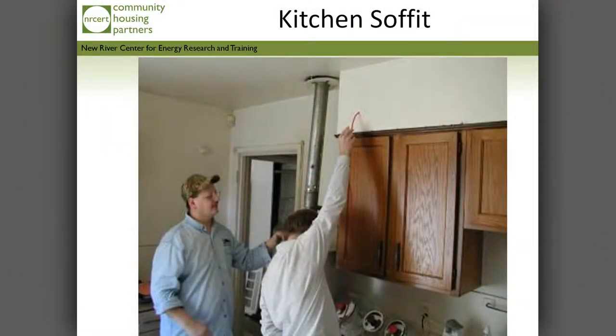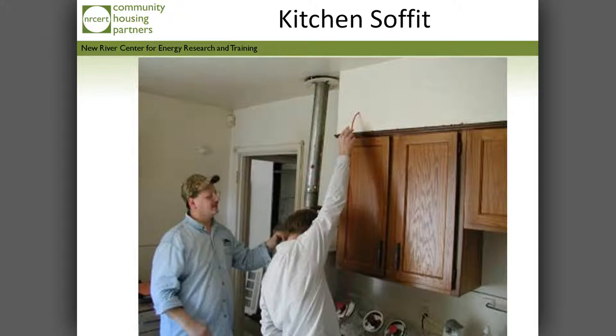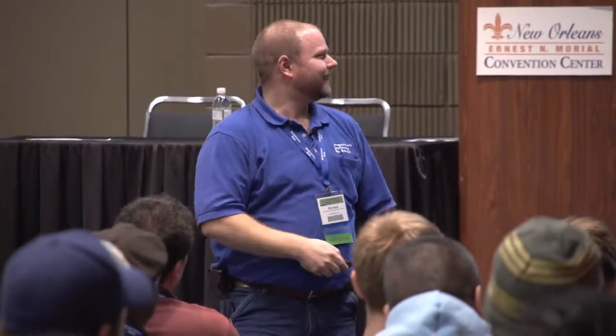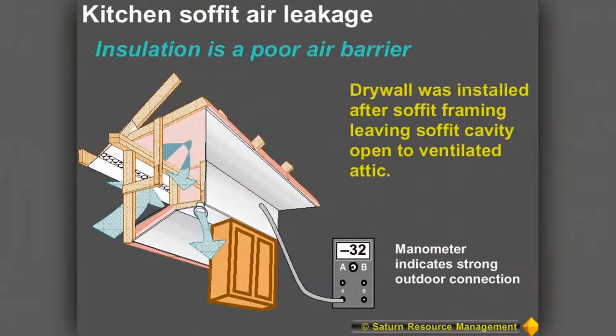Here we are testing in a kitchen soffit — or fur down, or bulkhead — basically over the kitchen cabinets. What should we get when we do a zonal test of this space? We should see zero, because we want that pressure plane, the air barrier, to be up at the top — not down at the bottom near the cabinets.